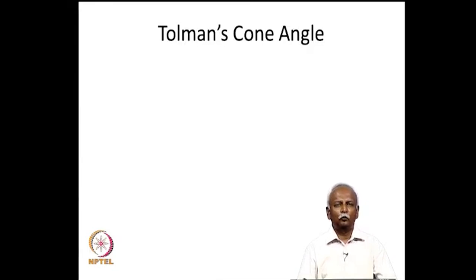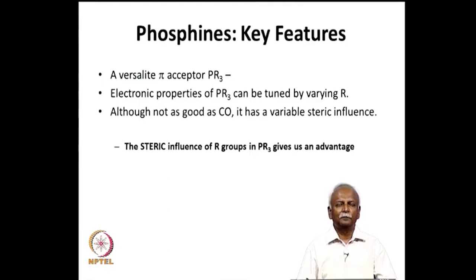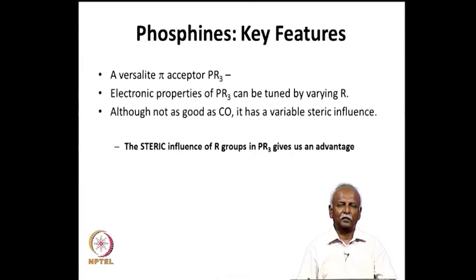Tolman's cone angle was developed primarily for phosphines. In earlier lectures we noted that for triaryl or trialkyl phosphines, both the steric and electronic properties can be varied through different R groups on the phosphorus. Although not as versatile as CO, the variability of the steric parameter gives phosphines a significant advantage in chemistry, so we need to quantify it with some predictive power.